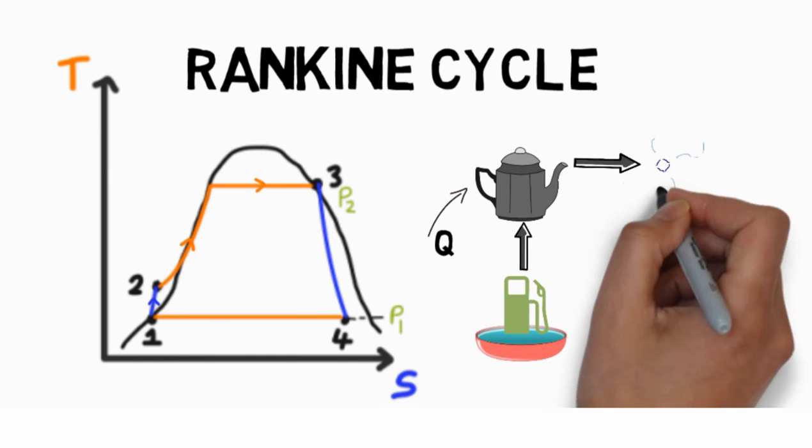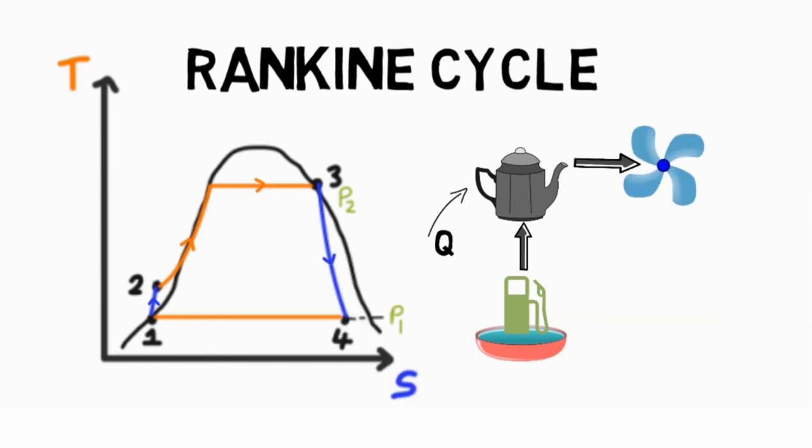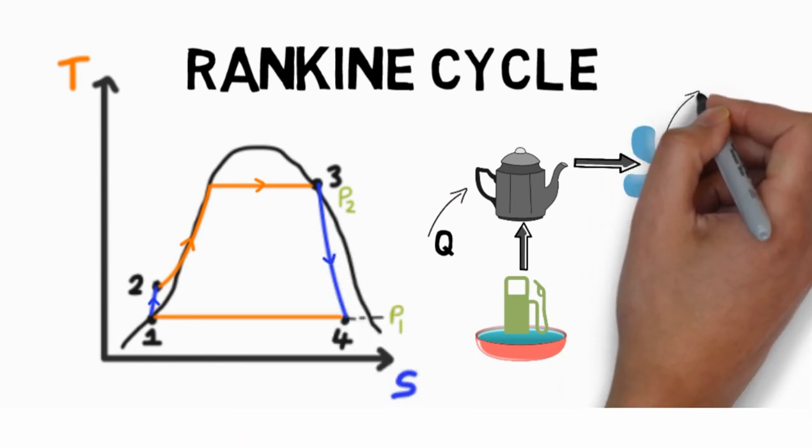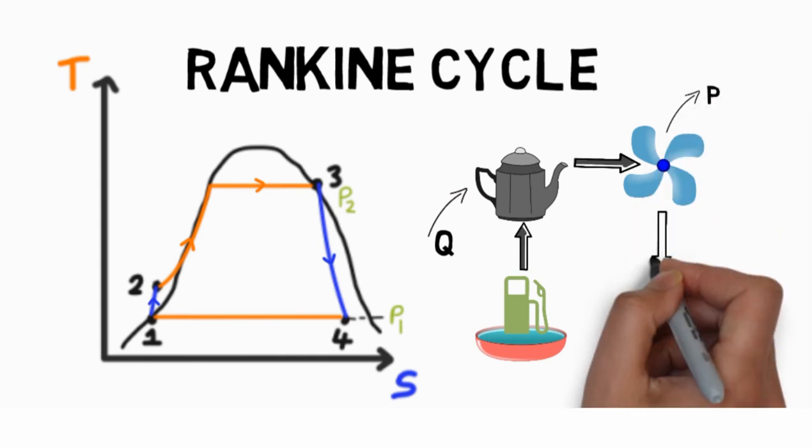Third, the dry saturated vapor expands through a turbine, generating power. This decreases the temperature and pressure of the vapor.